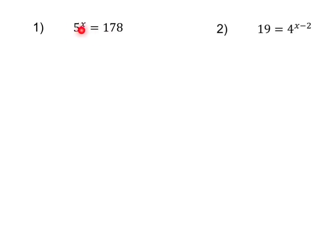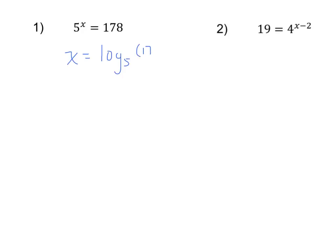Let's take a look at what we've got here: 5 to some power x equals 178. What we're missing is the exponent to which we need to raise 5 to get 178. That language should be familiar to you — we're looking for the exponent that we need to raise our 5 to to get 178. That's the very definition of what a logarithm is. So our exponent x has to be equal to our logarithm — log base 5 of 178. This logarithm has to equal x because x is the exponent I need to raise my base of 5 to to get 178.